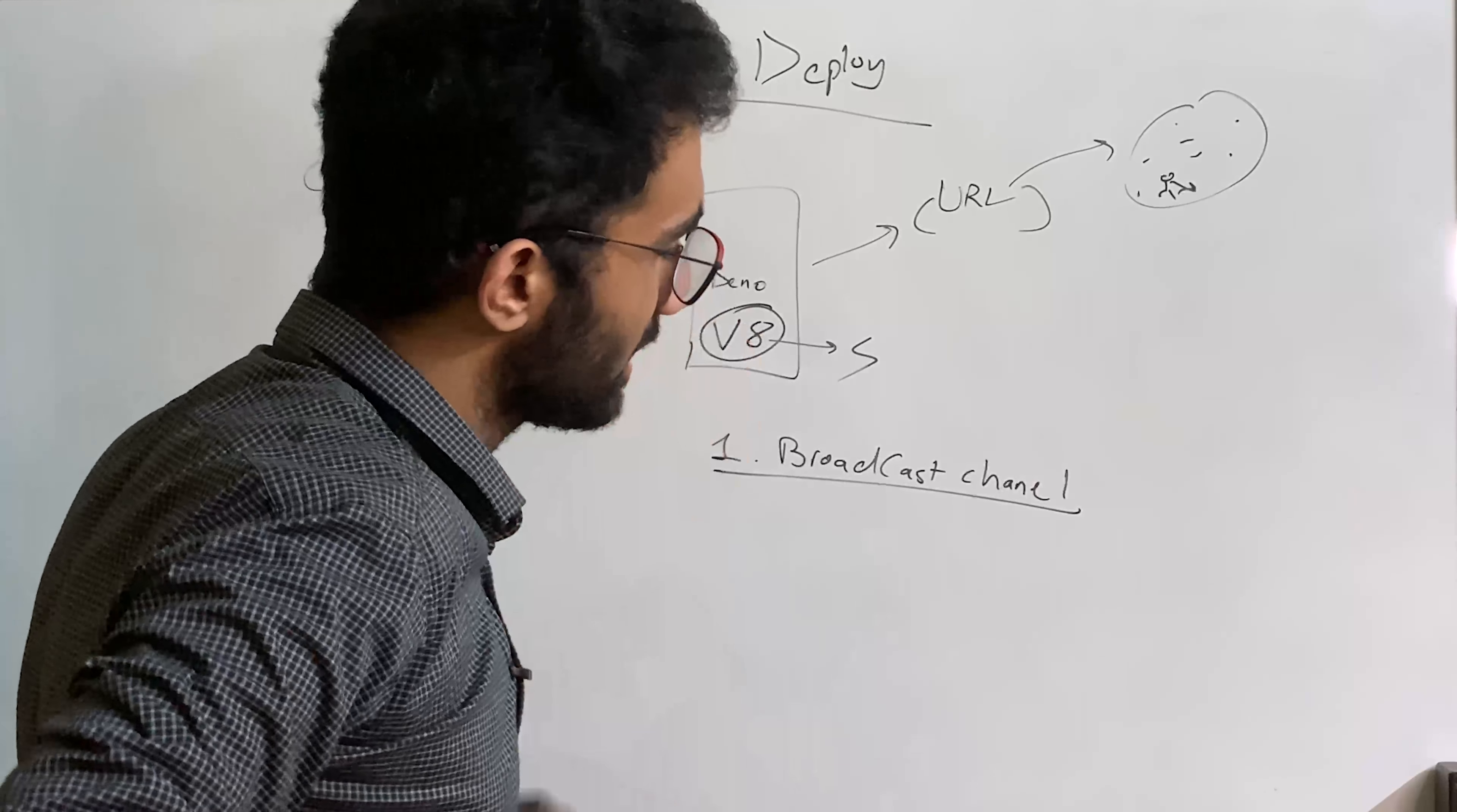So anyway, coming back to the browser. This API right here allows you to communicate between these two tabs. So this tab can securely send messages to this tab, this tab can securely send messages to this tab, and this is pretty much valid for any number of tabs as long as they have the same origin.